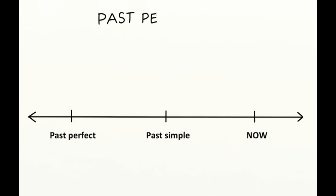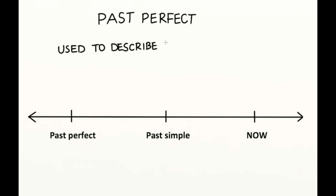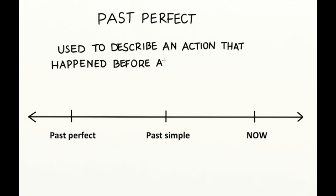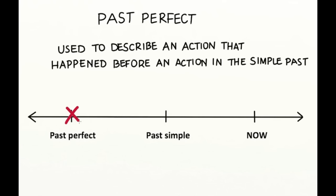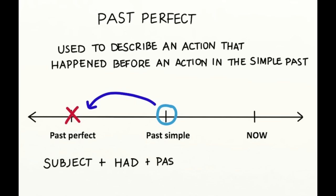The past perfect tense is used to describe an action that happened before an action in the simple past. The formula is subject plus had plus past participle.